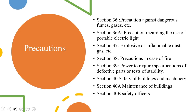We will now look into the precautions the Act provides. Section 36 underscores precautions against dangerous fumes and gases. Section 36A covers precautions regarding the use of portable electric lights. Section 37 is concerned with explosive or inflammable dust and gas. Section 38 covers precautions in case of fire. Section 39 covers the power to require specifications of defective parts or test of stability. Section 40 covers safety of buildings and machinery. Section 40A covers maintenance of buildings and section 40B covers provisions for safety officers.